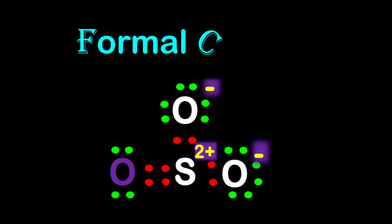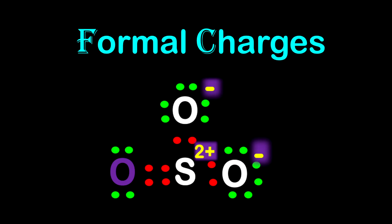Hello and welcome. We are wrapping up this week's series by doing formal charges. We have already looked at explaining how to draw Lewis dot diagrams, and we also looked at drawing the Lewis dot diagram for the phosphate ion, where we looked at which structure was appropriate. So let's dive into formal charges.